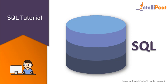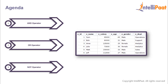Hey guys, welcome back to this SQL tutorial series. In this session we'll learn how to extract records on the basis of multiple conditions using the AND, OR and NOT operators. We'll start with the AND operator first, then filter records with the OR operator, and finally work with the NOT operator.